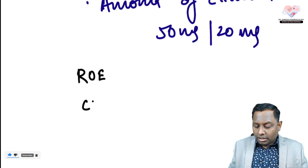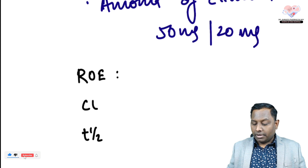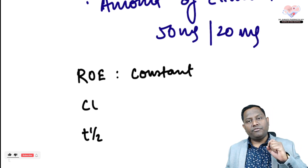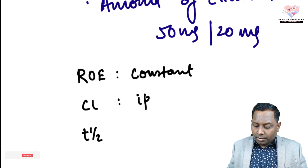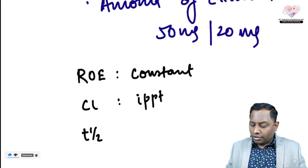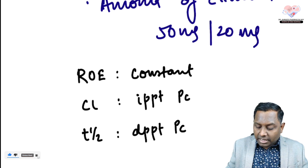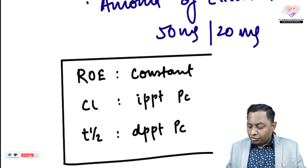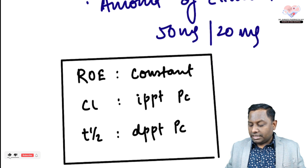Rate of elimination in zero-order kinetics is always constant, no matter what the plasma concentration is. Clearance is inversely proportional to plasma concentration — at higher plasma concentration, less drug is cleared; at lower concentration, more drug is cleared. Half-life is directly proportional to plasma concentration — higher plasma concentration means half-life automatically increases.